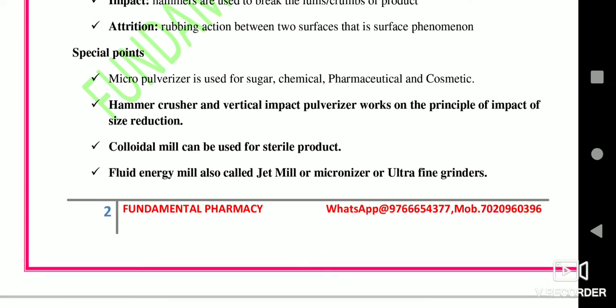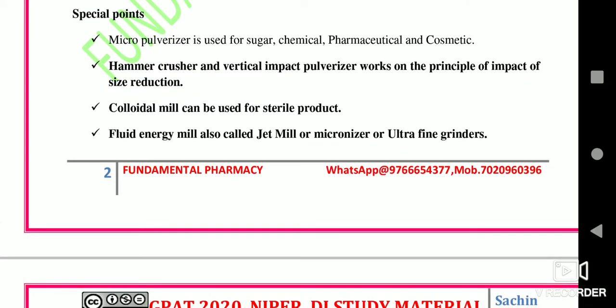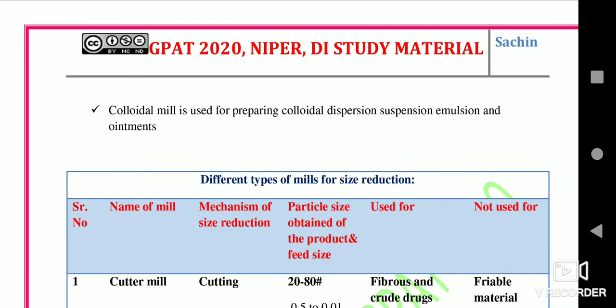Some special points important for GPAT and NIPER: the micro pulverizer is used for sugar, chemical, pharmaceutical, and cosmetic materials. The hammer crusher or vertical impact pulverizer works on the principle of impact. The colloidal mill can be used for sterile or parenteral products because it can be isolated and covered. The fluid energy mill is also known as a jet mill, micronizer, or ultra-fine grinder. The colloidal mill is used for preparation of colloidal dispersions, colloidal suspensions, emulsions, and ointments.